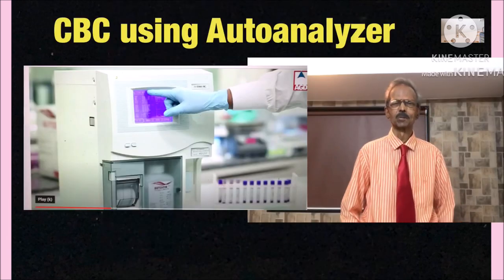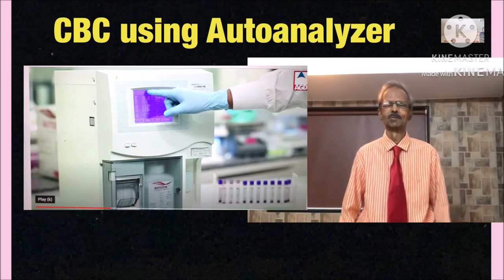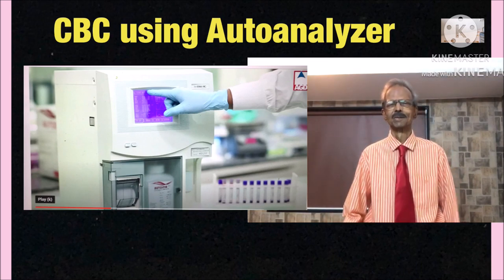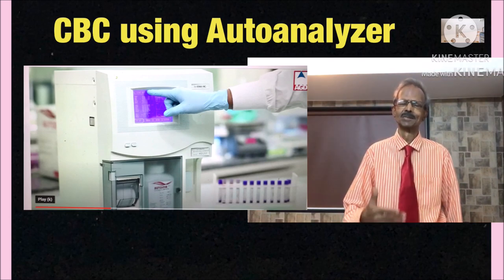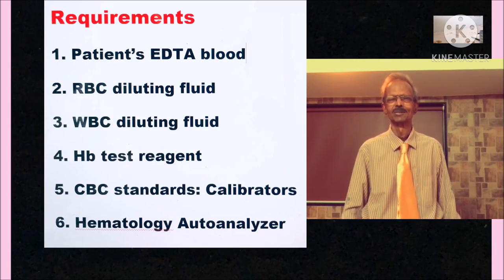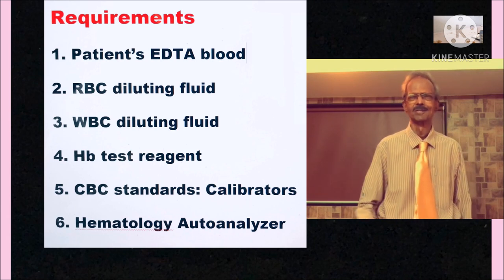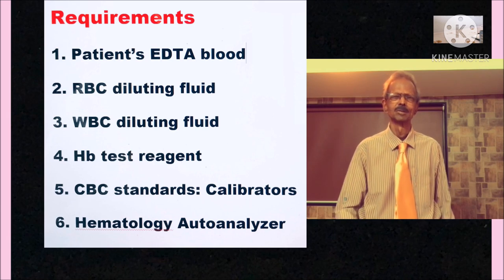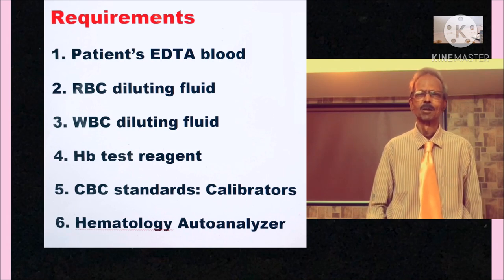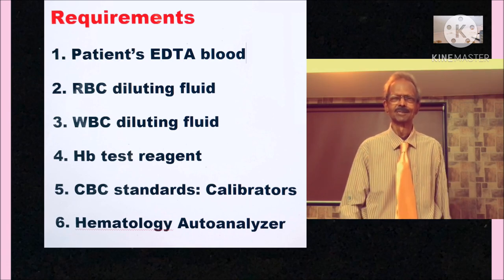Now let us see how complete blood count, complete hemogram determination you will perform during your intensive. And that is performed on hematology analyzers. And that can be done in 2-3 minutes. And the requirements are: Patient's EDTA blood, RBC diluting fluid, WBC diluting fluid, Hemoglobin test reagent, CBC standards. These are called as calibrators. And hematology autoanalyzers.